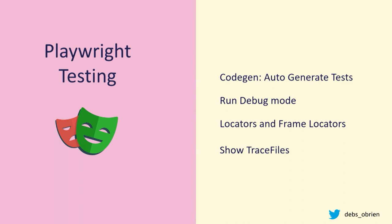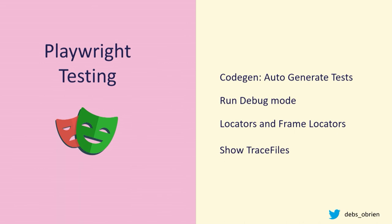Playwright testing comes with CodeGen to auto-generate your tests — I was able to write those tests using CodeGen in seconds, and there was no editing done on that video. You can run tests in debug mode to step through one by one. There are locators and frame locators for iframes. Trace files let you really go in and see what's going on. Auto-wait is built in for all actions — no need for timeout calls. Tests run in parallel, so they're super fast, and you can run on multiple browsers and devices. It also intercepts requests, follows redirects, bypasses CORS, and manages cookies.